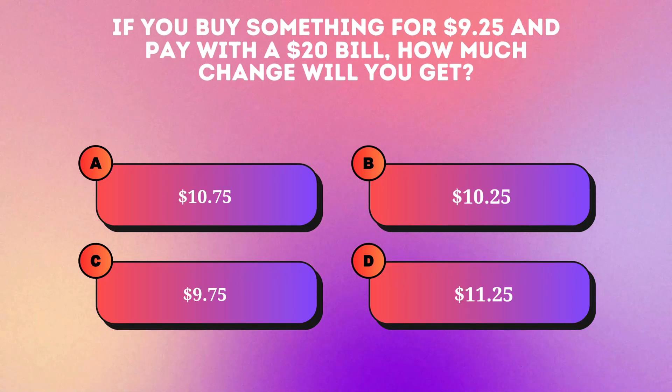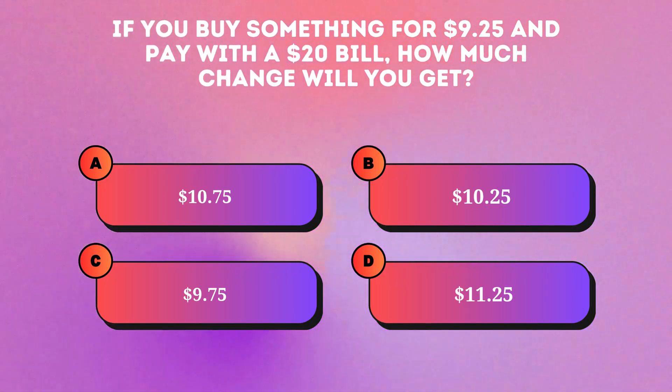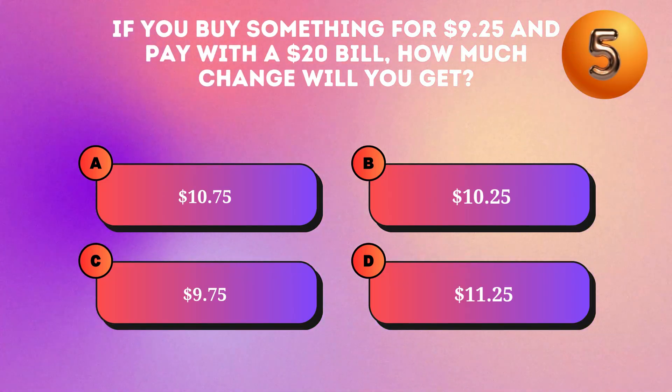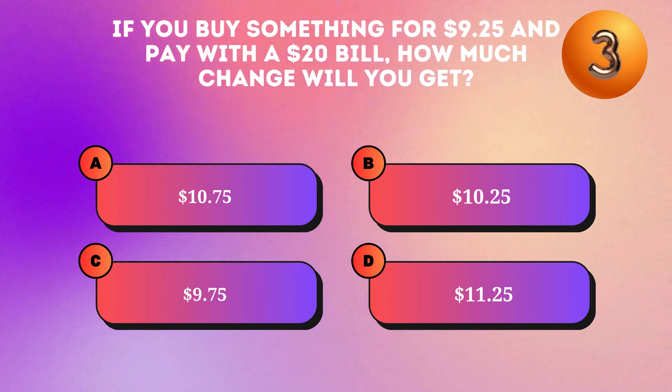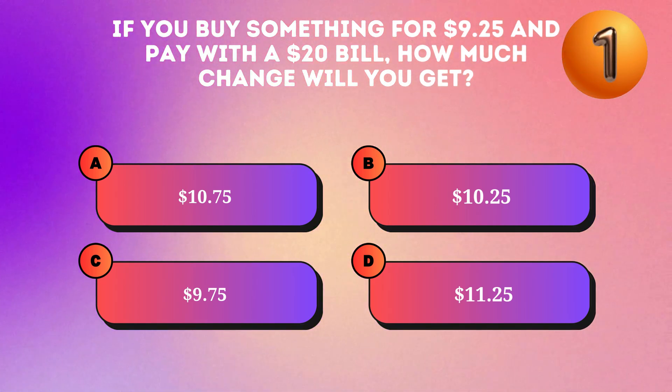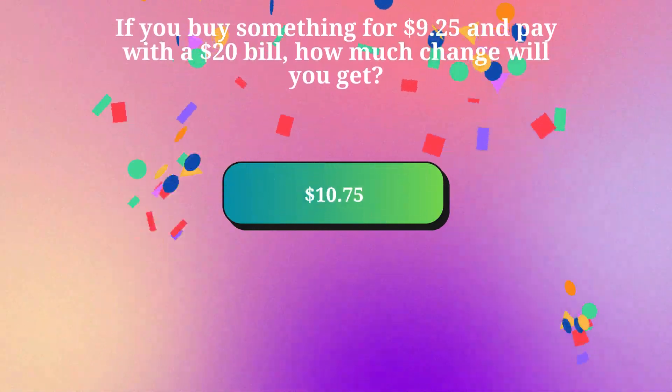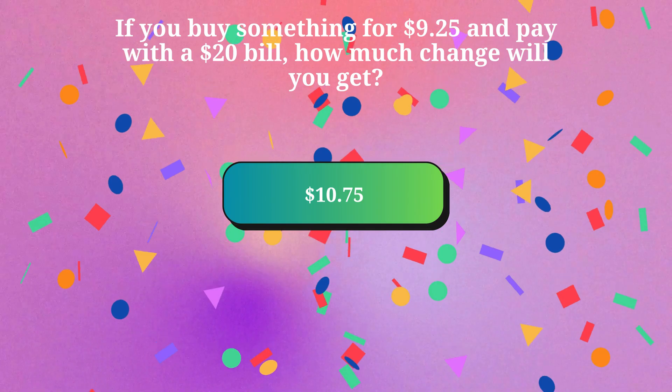If you buy something for nine dollars twenty-five cents and pay with a twenty dollar bill, how much change will you get? Ten dollars seventy-five cents.